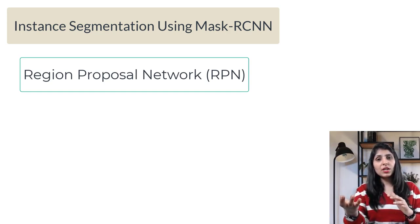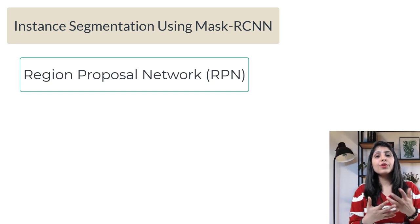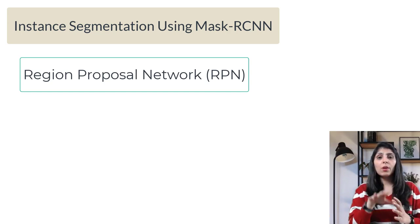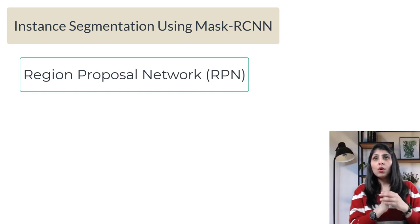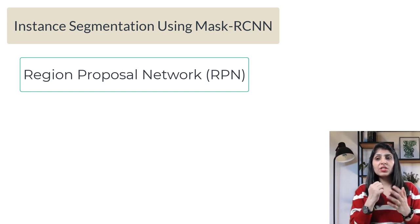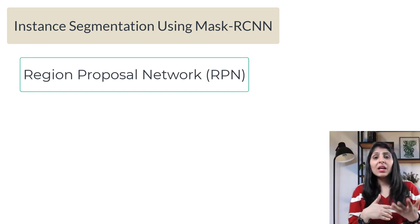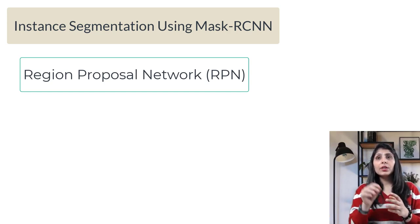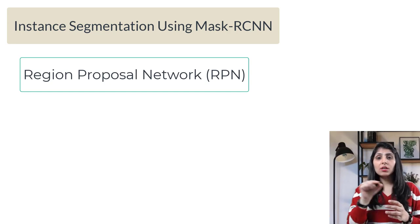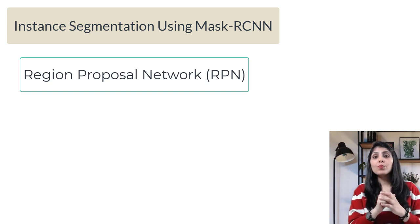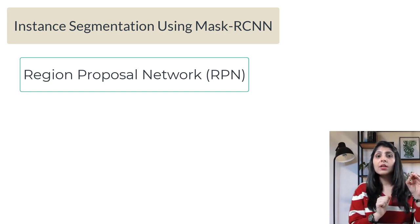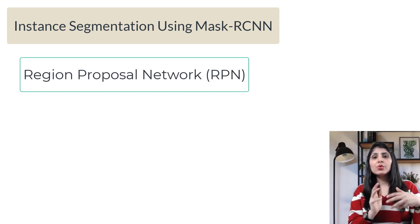The Region Proposal Network acts like a binary classifier. It tells you whether an object is present in a region or not. If an object is present in a region, the RPN outputs one; if not, it outputs zero. So RPN uses a binary classifier to find out whether objects are present in the regions or not.